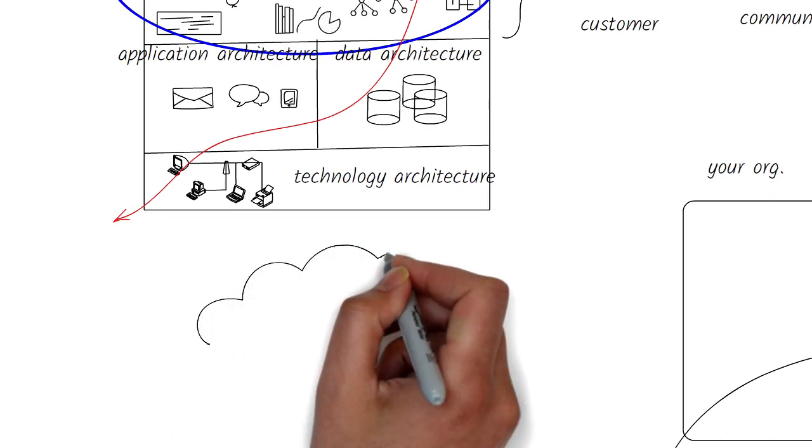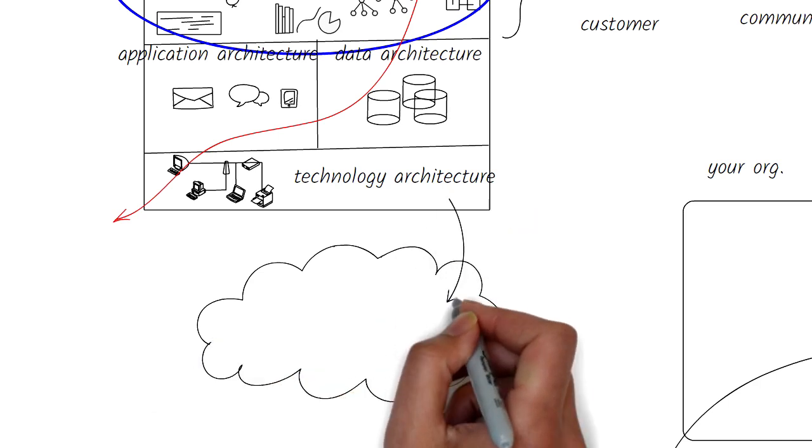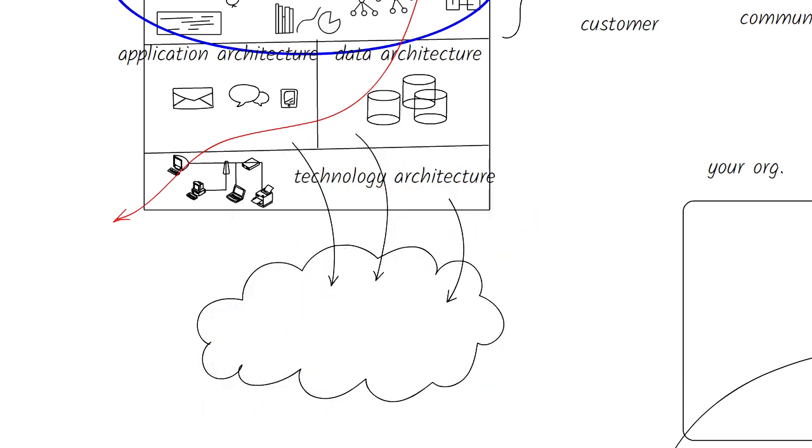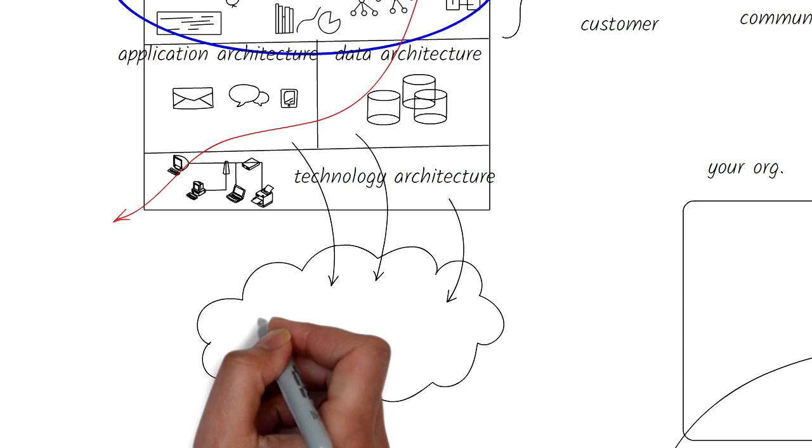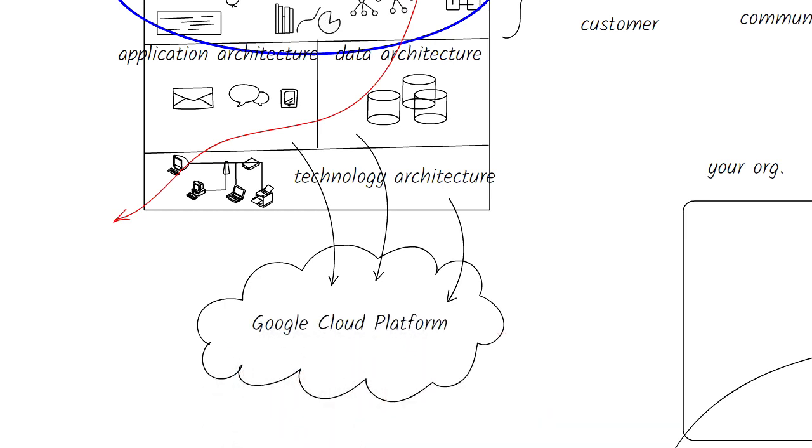For example, if you have a cloud migration strategy to move your applications, data, and infrastructure to the Google Cloud platform, which by the way is one of the most mature for AI, then you could use their native AI services right away to get an immediate lift.